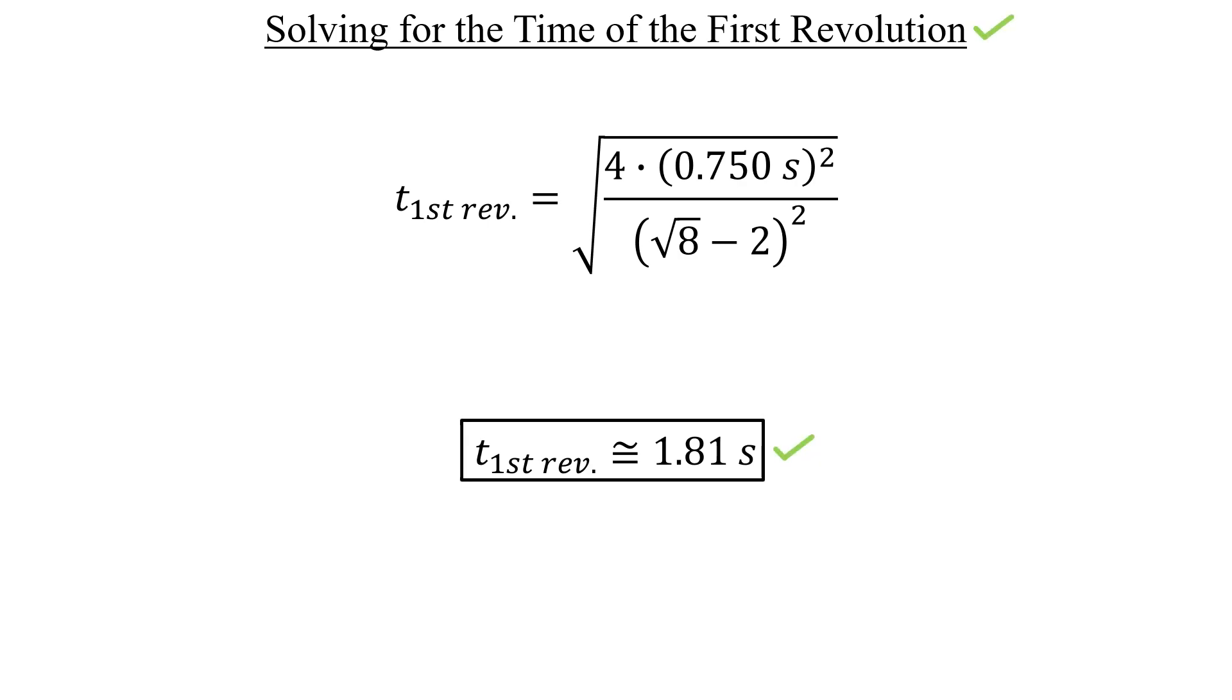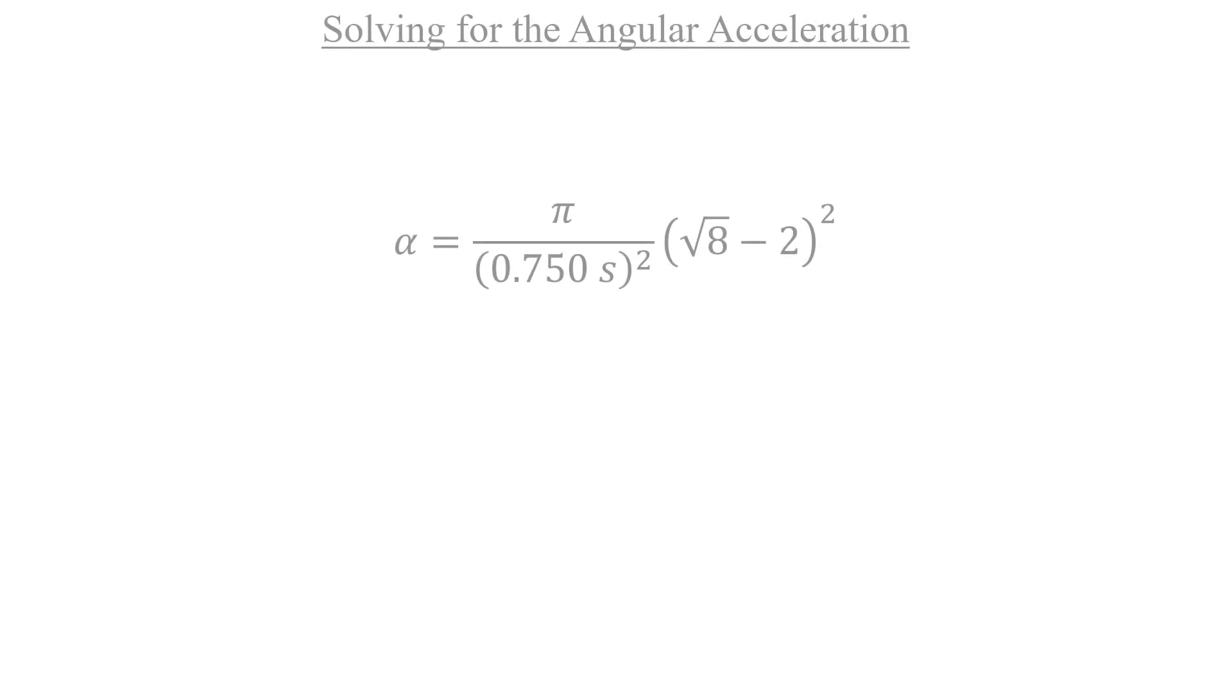For part B, we actually completed most of the work already. This was our expression for the angular acceleration. And all we have to do is just plug this into the calculator as well. I get approximately 3.83 radians per second squared as the answer to part B.